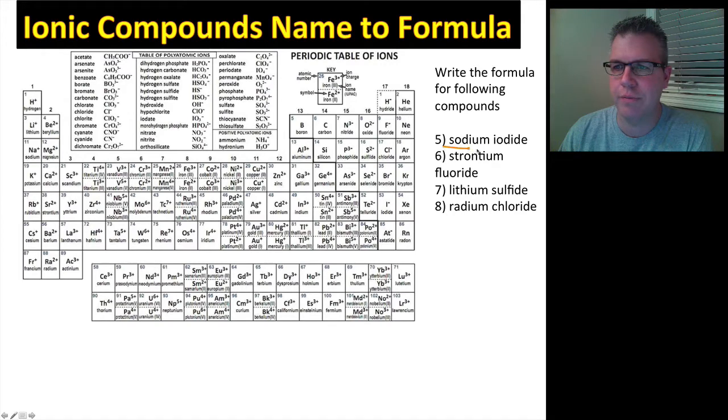All right, so our first example is sodium iodide. This is going to be a little bit more difficult because we're not just looking for the symbol, we're actually looking for the name, but you'll become familiar with where they are. The first thing we're going to do is locate the cation, in this case it's sodium. Sodium is over here. And we go and look over and find iodide, it's right over here. So sodium is Na positive one and iodide is I negative one.